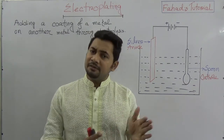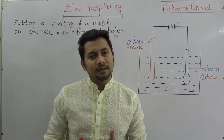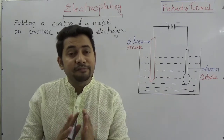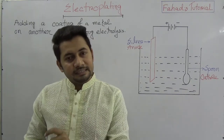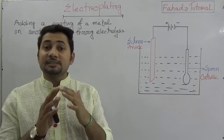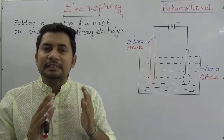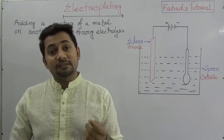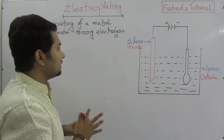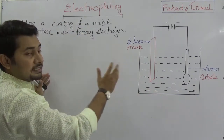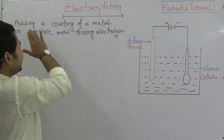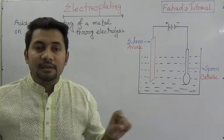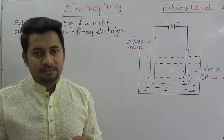Assalamu alaikum warahmatullah. In my previous video, I explained what is the mechanism of electrolysis, galvanic cell, and what are the differences between electrolytic cell and galvanic cell. In this lesson, I shall explain the mechanism of electroplating, which is a practical version of electrolysis. Electroplating is simply adding a coating of a metal on another metal through electrolysis.